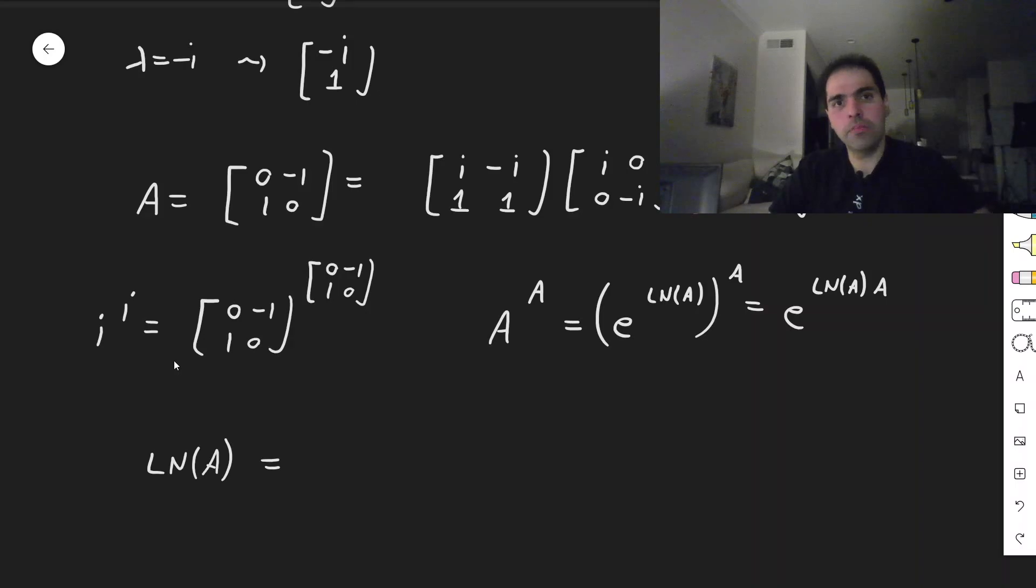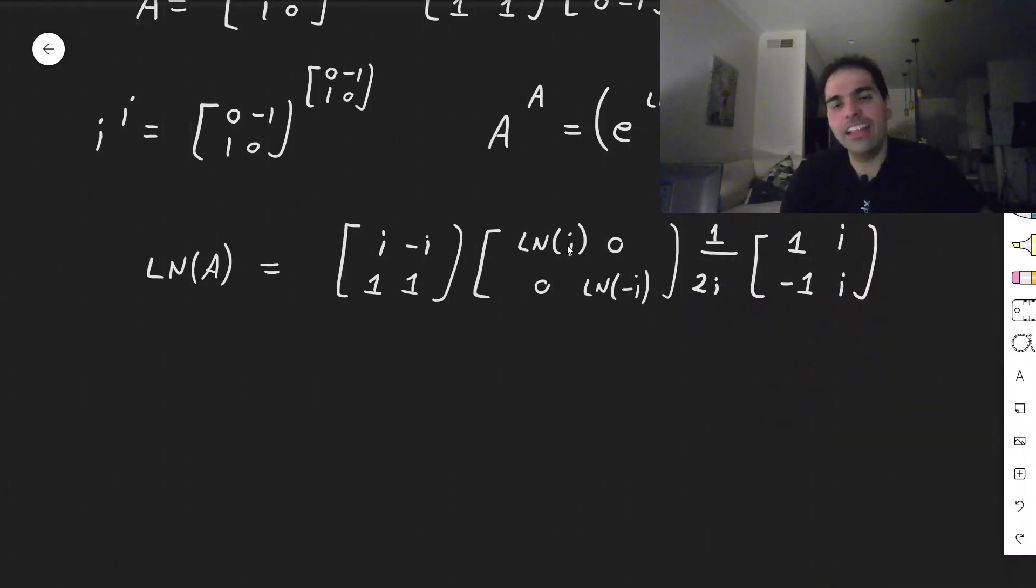So ln of A, that becomes, so for those diagonal matrices, so for diagonalization, you just put ln on the eigenvalues. So i, 1, minus i, 1, and then ln of i, 0, 0, ln of minus i. And then you calculate the inverse of this, so I think the determinant is 1 over 2i. And then that becomes 1, i, minus 1, i.